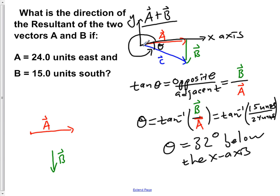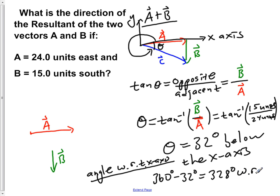So the angle with respect to x-axis, that would be 360 degrees minus the 32 degrees, which would give us 328 degrees with respect to the x-axis.